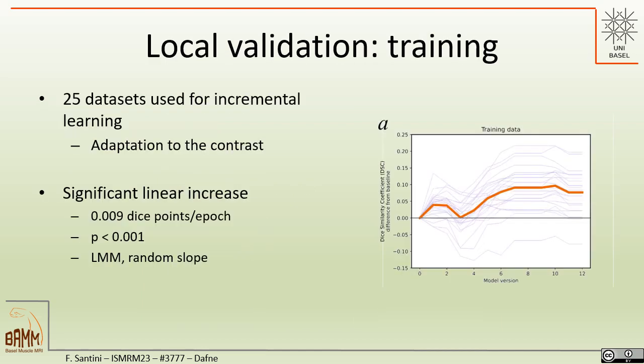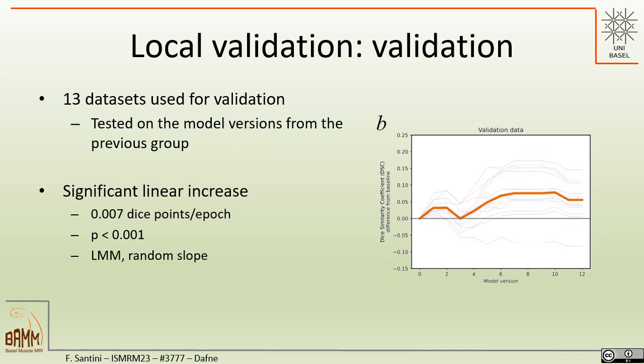For the local validation, we used 25 datasets for training the model in an incremental fashion, so that with each dataset the model could adapt to the new contrast. When analyzing the performance of all models over these 25 datasets, we saw that overall performance was significantly increasing. We then applied the models to the remaining 13 sets and again saw a significant increase, although with a slightly smaller coefficient, meaning that even on completely new datasets with a similar contrast the model improved its performance.